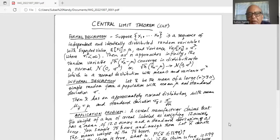Which is a normal distribution with mean zero and variance sigma squared. More informal description of Central Limit Theorem.